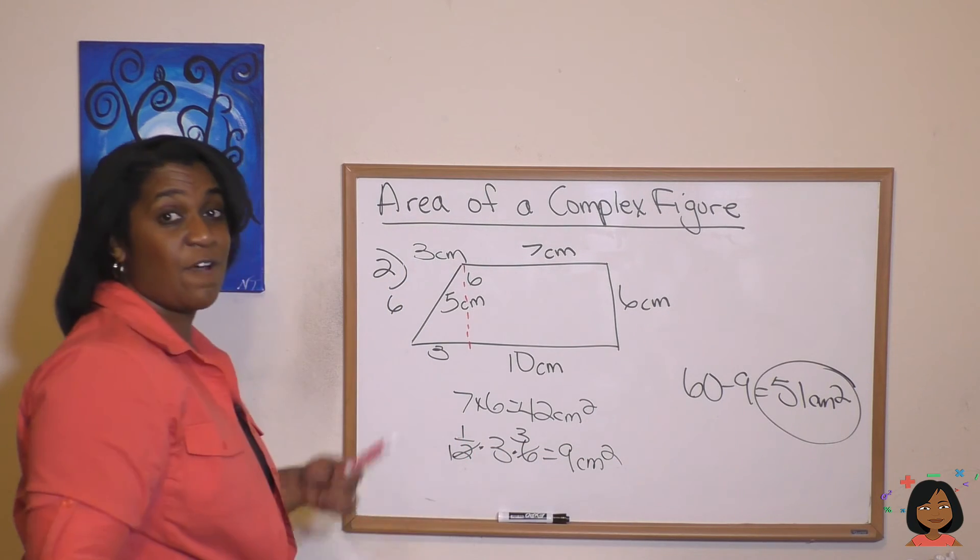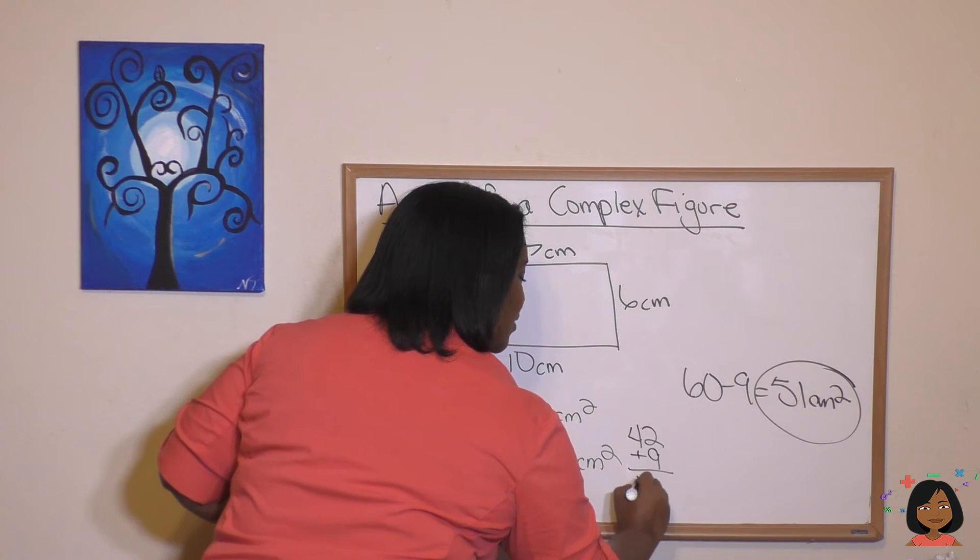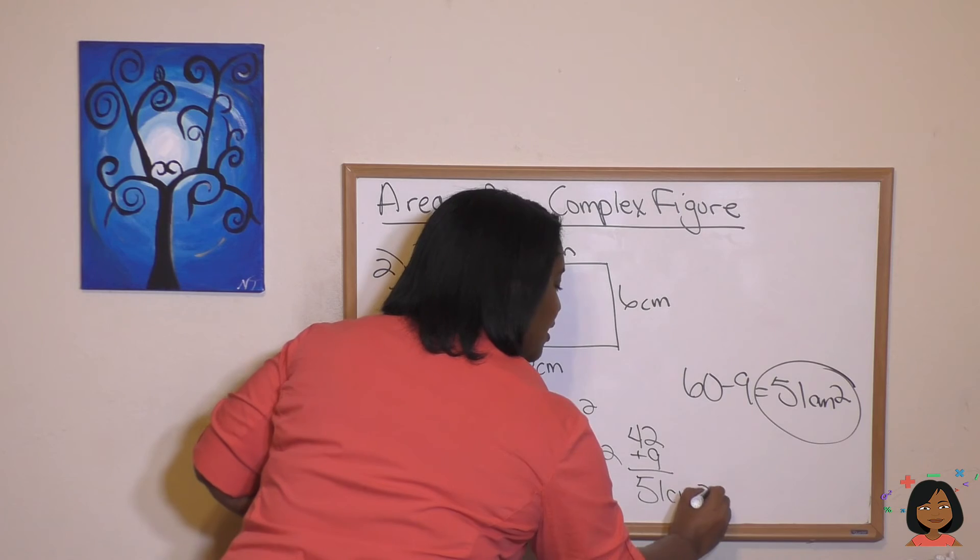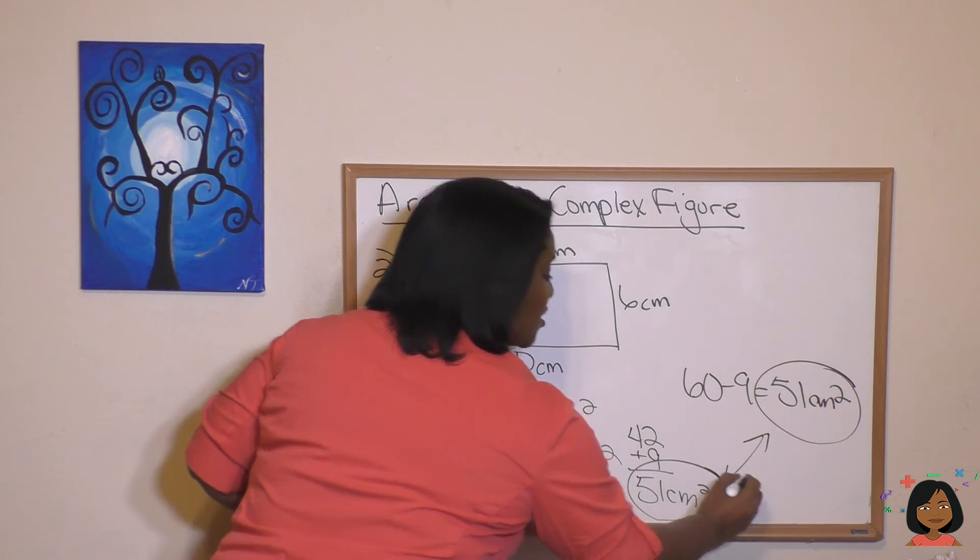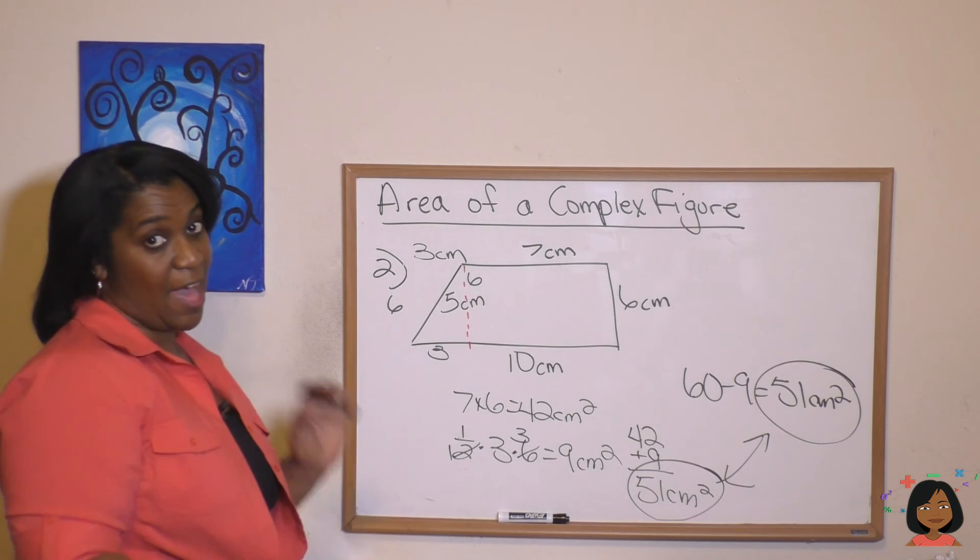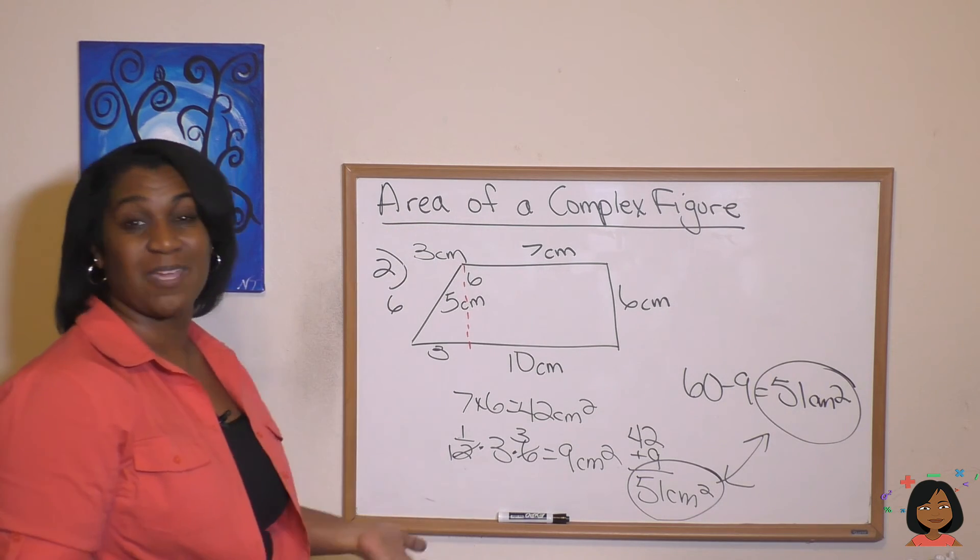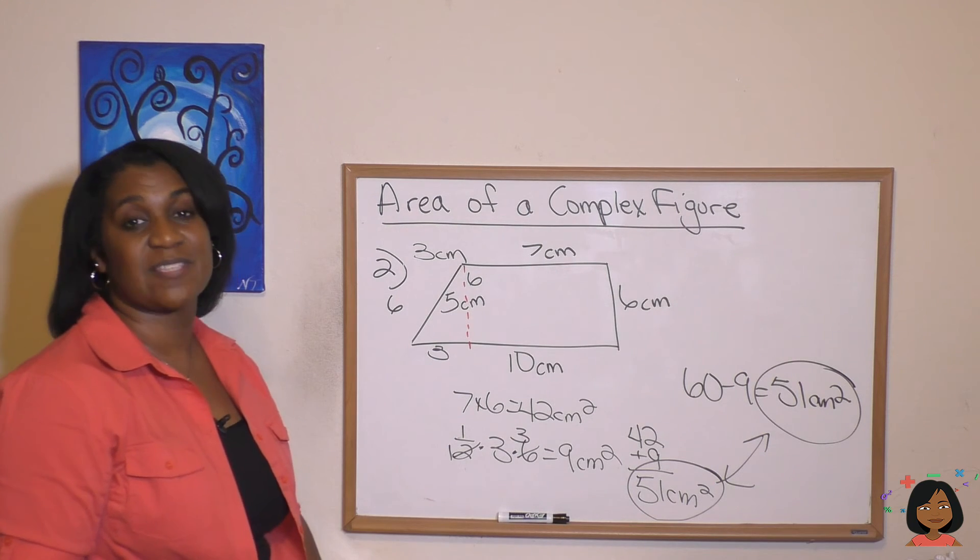So now we're adding 42 plus 9. And guess what that equals? 51 centimeters squared. So it doesn't matter how you do it. If you do two pieces and add them together or if you do the whole and subtract out the missing piece, they're still going to equal the same thing. The key is just knowing how to break it down.